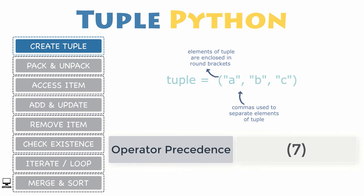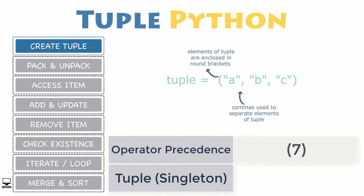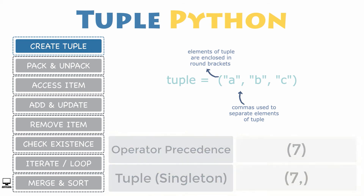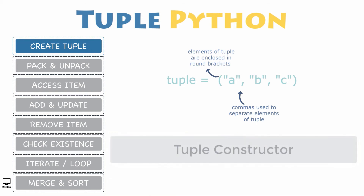Since parentheses are also used to define operator precedence in expressions, Python evaluates the expression seven as simply the integer seven and creates an integer object. To tell Python that you really want to define a singleton tuple with only one value, include a trailing comma just before the closing parenthesis.